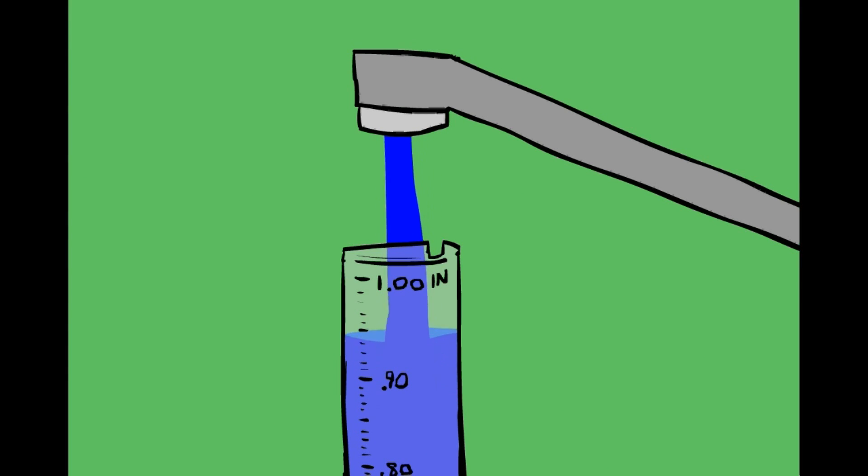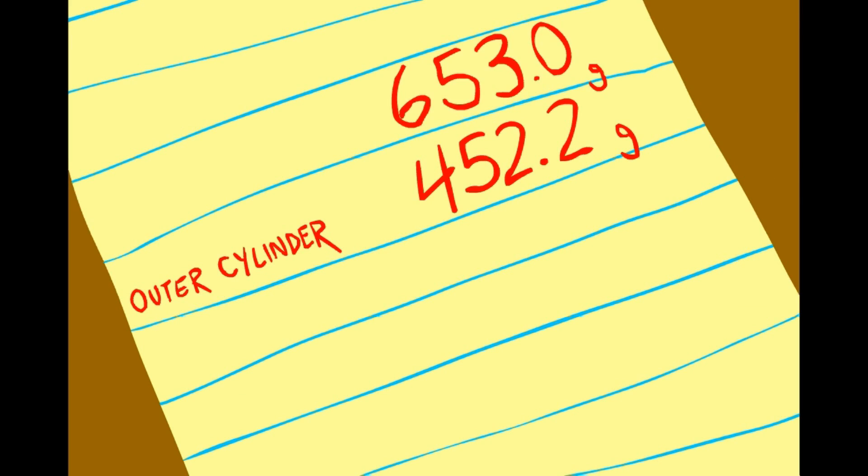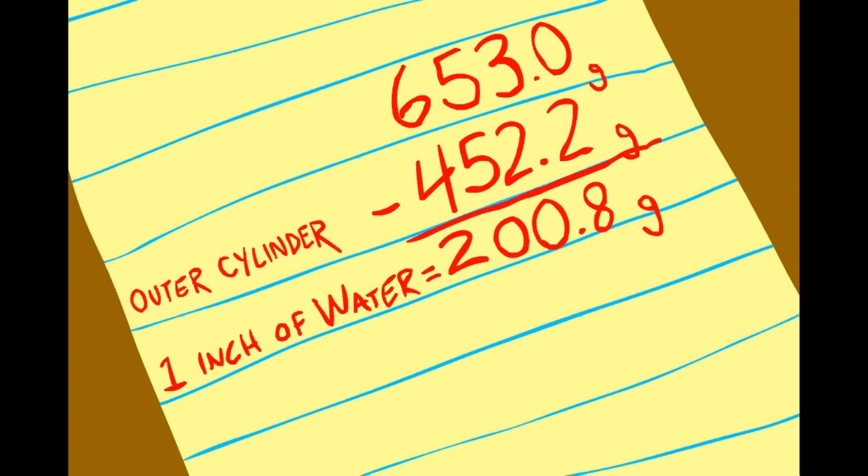Then take your inner measuring cylinder and fill it to one inch exactly. Pour the water into the outer cylinder and weigh it. Subtract the weight of the outer tube from the measurement you just took to find the weight of one inch of water.